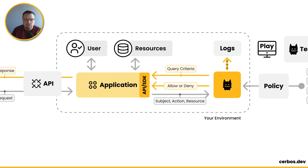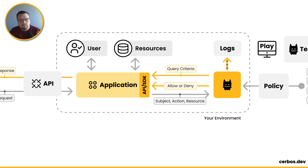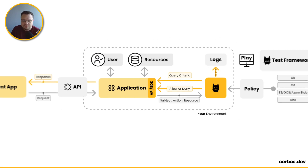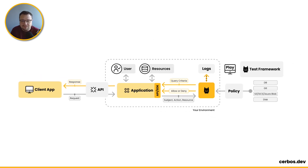So now back in your application, you've got back from SERBOS that allow or deny decision. Inside of your application code, where you had that if-else style logic, it's now a single if statement: if SERBOS says allow, do the action. If not, return some sort of error or unauthorized message back to the user. And then your application works as normal from there.